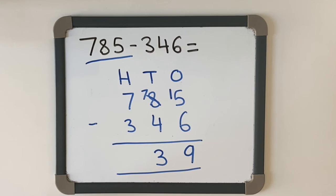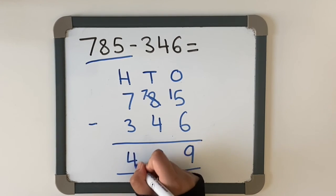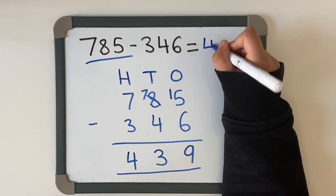And then we've got our hundreds column: 700 take away 300, which is 400. So the answer is 439.